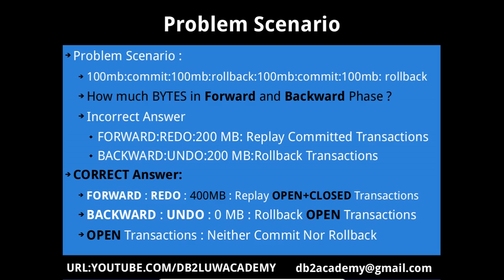Let me give you the incorrect answer. If you associate the forward phase with redoing all transactions, you might say there are 200 MB of committed transactions so it will replay 200 MB. And in the backward phase, which is the undo phase, you might say 200 MB of uncommitted transactions are to be rolled back. So if you're saying forward phase is 200 MB and backward phase is 200 MB, you are completely incorrect.